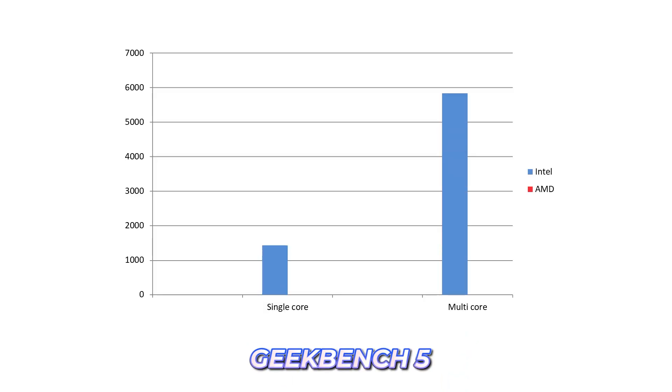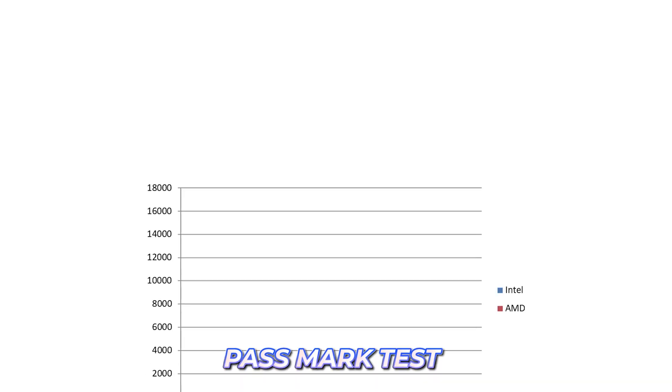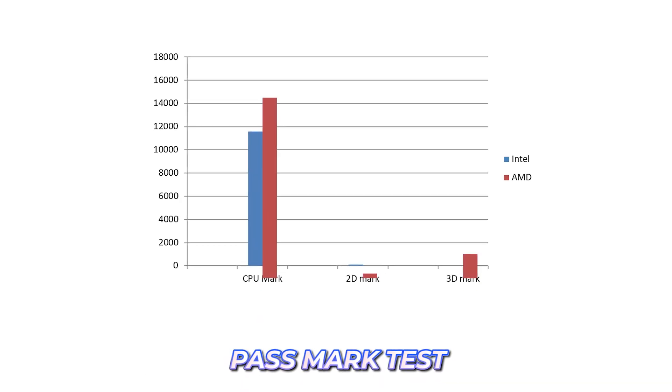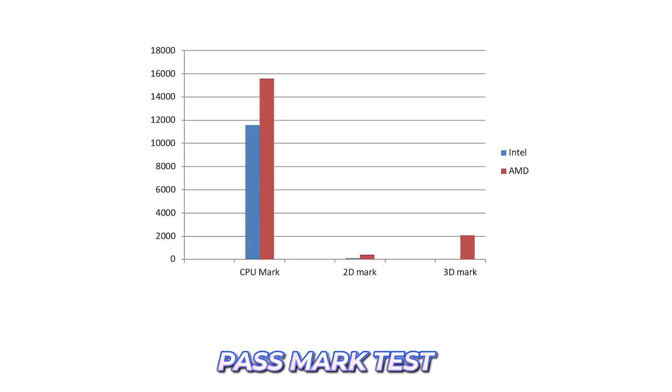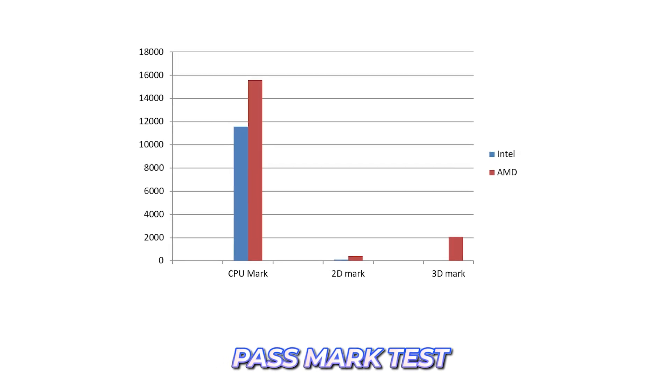Still confused? Let us look at the Geekbench 5 scores — here is the Intel story and here is the AMD story. Still not convinced? Here is a PCMark test — this is the Intel story, and this is the AMD story. Can you make out any differences between these two brands and these two laptops?